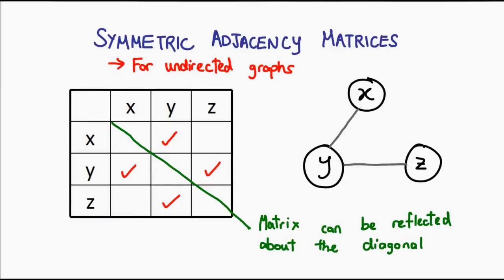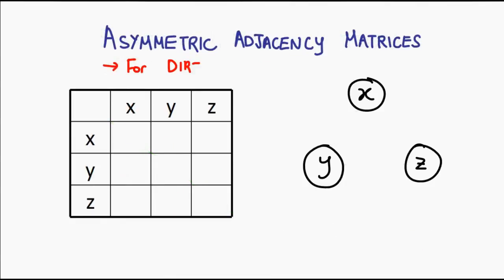In other words, you can reflect the matrix about its diagonal. This is not the case if you have a directed graph, for the simple reason that if you have an arrow from x to y, it means that you can reach y from x, but it does not mean that you can reach x from y. Just a little interesting observation.